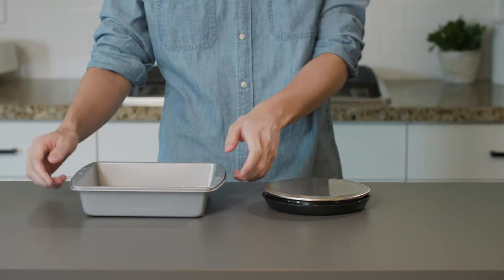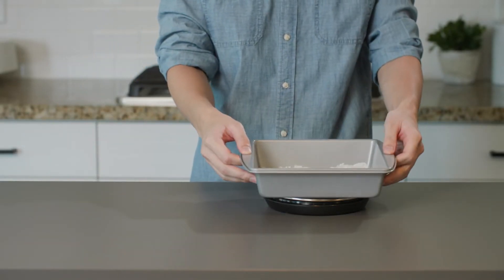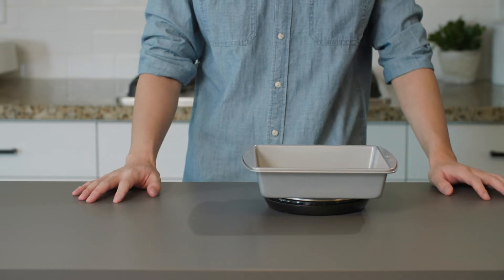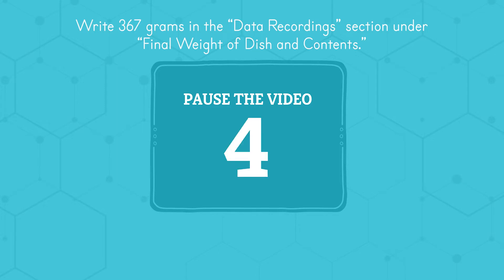Let's do a little more work and some math. First, I'm going to weigh the dish again to find the final weight. It's 367 grams. Record this weight in the data recording section under final weight of dish and contents. Now we can find the weight of the evaporated water by subtracting the final weight we just found from the weight of the dish of salt water we found yesterday.